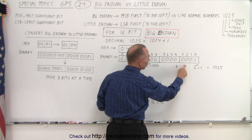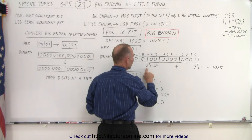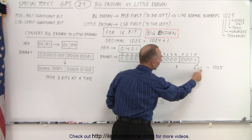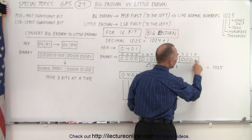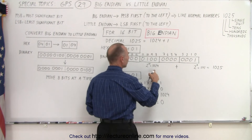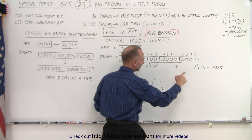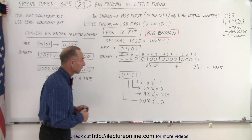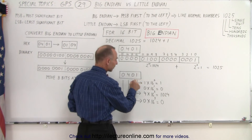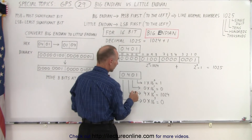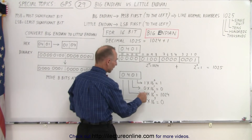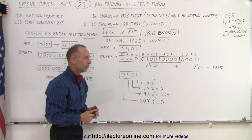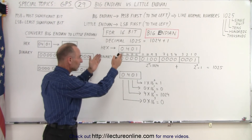In Big Endian, the first bit represents 2 to the 0 power times the value stored there, then 2 to the 1st, 2 to the 2nd, 2 to the 3rd, 2 to the 4th, all the way to 2 to the 10th power. Since everything else is zero we don't need to worry about it. Here, 2 to the 0 equals 1, multiplied by 1, giving 1. And 2 to the 10th times 1 is 1024. So 1024 plus 1 equals 1025, the decimal equivalent. In hex, the first digit to the right is 1 times 16 to the 0, then 0 times 16 to the 1st, 4 times 16 to the 2nd, and 0 times 16 to the 3rd — confirming the Big Endian representation 0x0401.